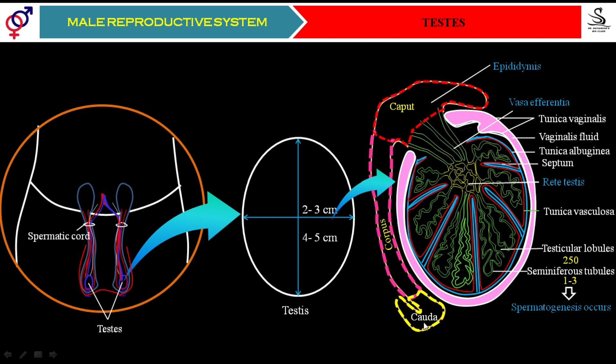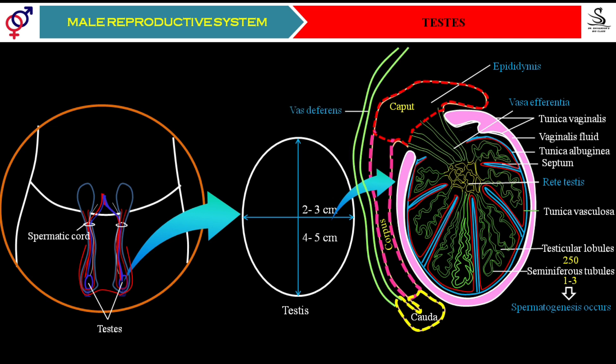The epididymis has three portions: caput, corpus, and cauda. The cauda epididymis ascends along with the next tubular part called the vas deferens. The vas deferens joins with a duct coming from the seminal vesicles, forming the ejaculatory duct. The right ejaculatory duct and the left ejaculatory duct both open into the urethra, which passes through the penis and opens at the tip of the penis.